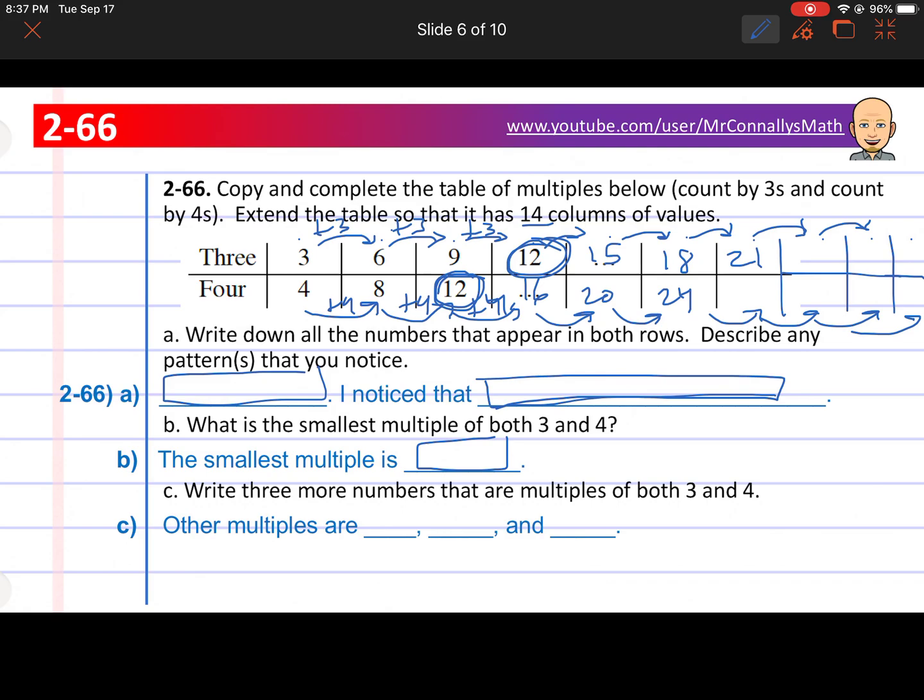What is the smallest multiple of both 3 and 4? So the smallest number they both go into. So that's the first one, and it looks like it's going to be 12. So go ahead and write in here 12 as the answer. That's the smallest number they both can go into. Write three more numbers that are multiples of both 3 and 4. That's the numbers we just looked at. Pause the video and finish that.